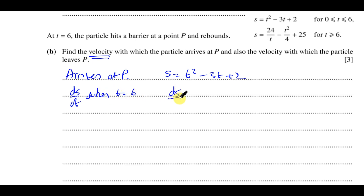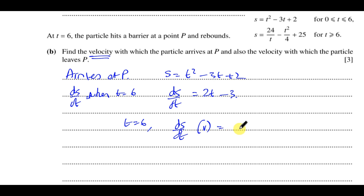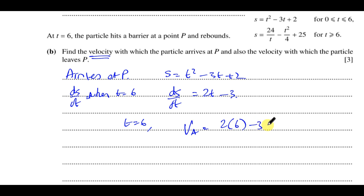We already worked out ds/dt as 2t minus 3. When t equals 6, the velocity equals 2 times 6 minus 3, which is 12 minus 3, which is 9 meters per second. So the velocity with which the particle arrives at P is 9 meters per second.